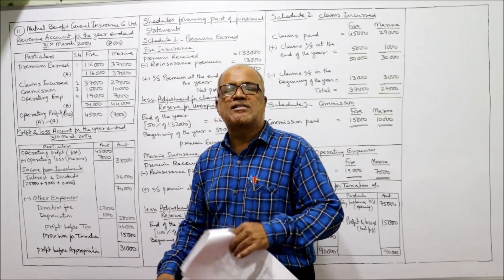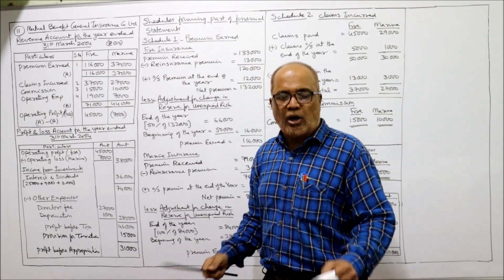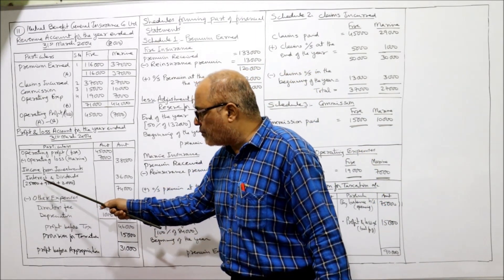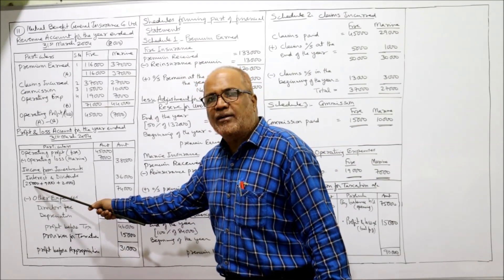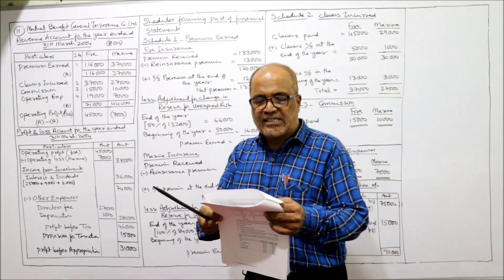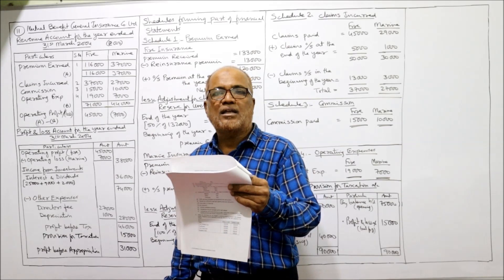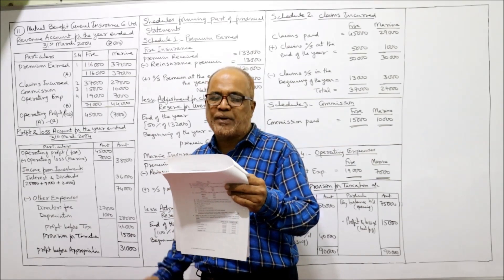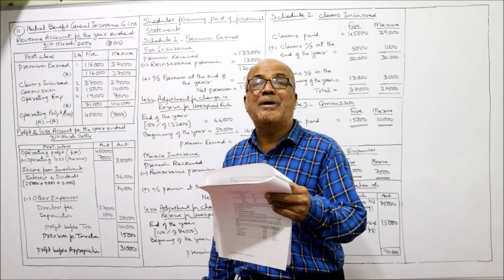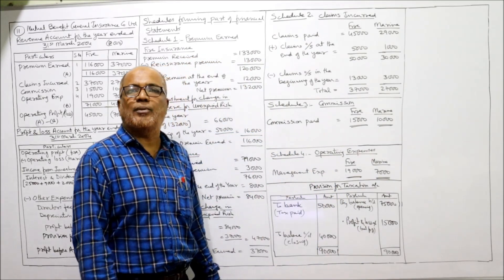Next, interest received — interest and dividend are both income from investments. Interest received is 9,000, so income from investments = 25,000 (dividend) + 9,000 (interest) = 34,000. Fixed assets at beginning of year (1st April 2003) are 10,000. Income tax paid has already been accounted for. Outstanding claims at beginning of year (1st April 2003) will be used in Schedule 2 — Claims Incurred.